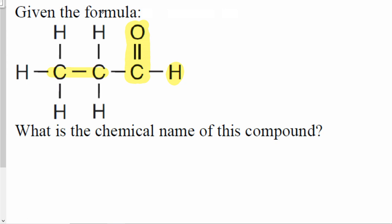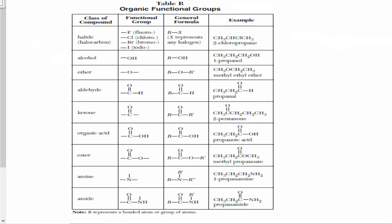That oxygen has a double bond and it is connected with the carbon. That carbon has a hydrogen on one side and a carbon group on the other. You need to learn how to convert this into a general formula. I have oxygen double bonded with carbon — on the right side I have a hydrogen, and on the left side I have another carbon group. I have to find this general formula in reference table R. Looking at reference table R, you will realize that this is an aldehyde.